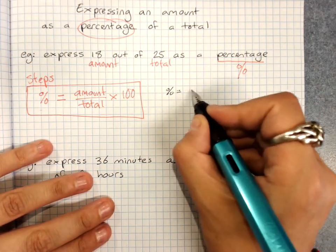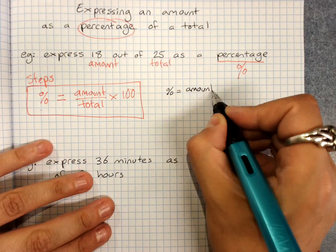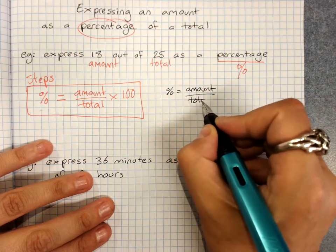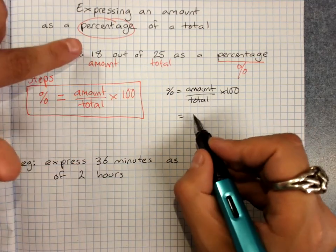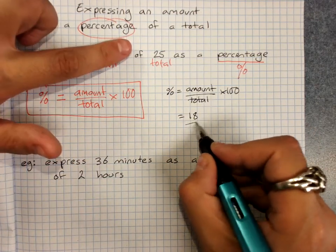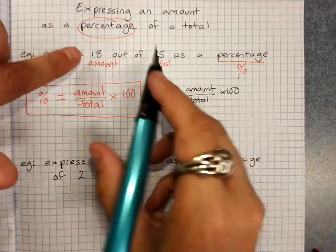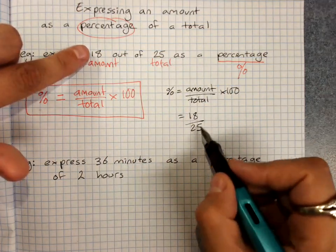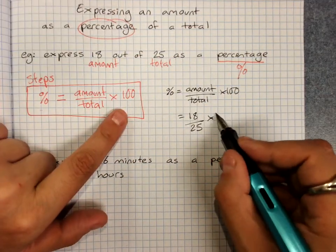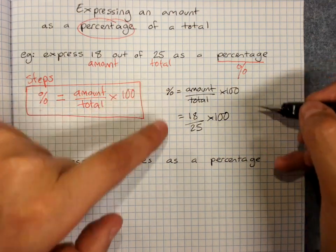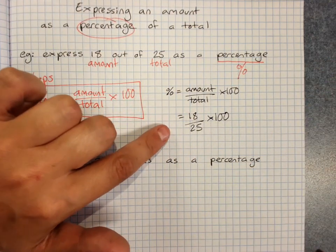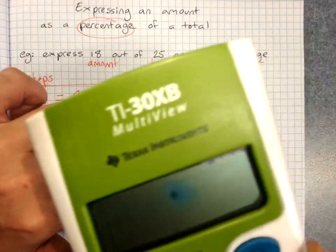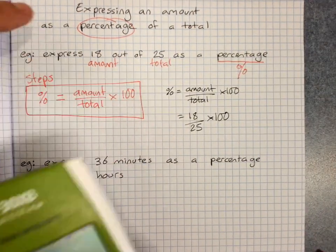For this one, when I've got percentage equals amount out of total times 100, the amount is 18 out of 25 and that makes sense. 18 out of 25, it's a fraction, 18 out of 25 times 100. By doing the proper working, it tells you exactly what to type into your calculator because anytime you pick the calculator up you should already have written what's going into it.